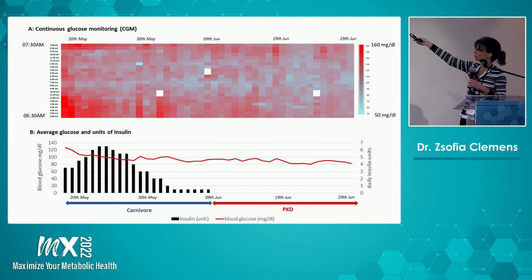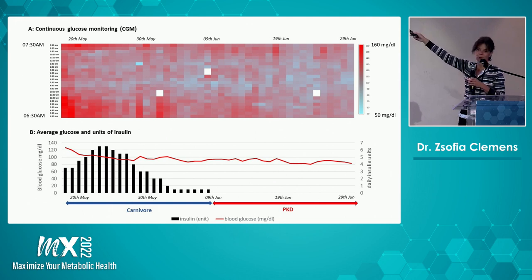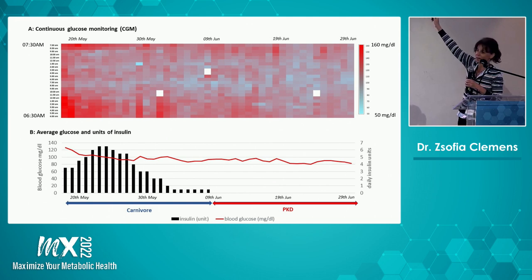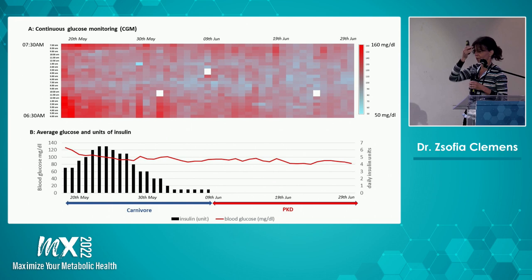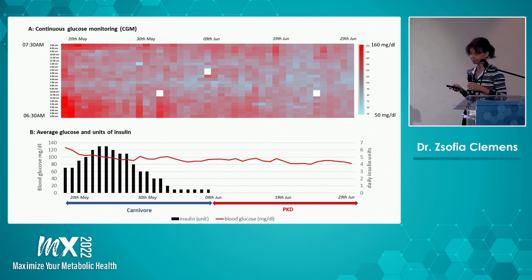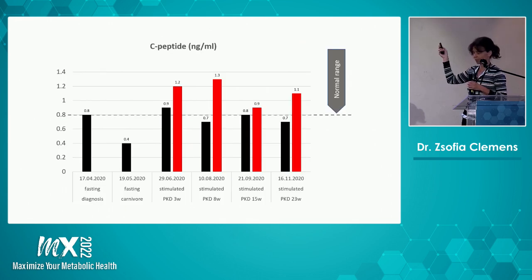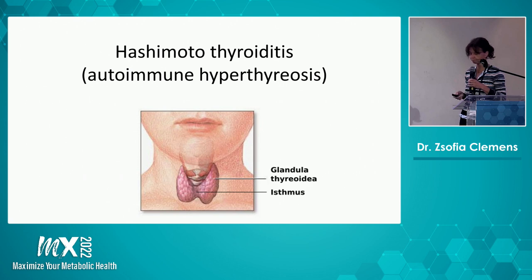Here is another phenomenon we can see — this red patch is the dawn phenomenon, which we very often see with a carnivore diet, in patients taking excess insulin, or in those who usually have a higher blood glucose level. This phenomenon also fades away if somebody is closely following the PKD. The C-peptide production — both fasting and stimulated — remained stable in this patient.